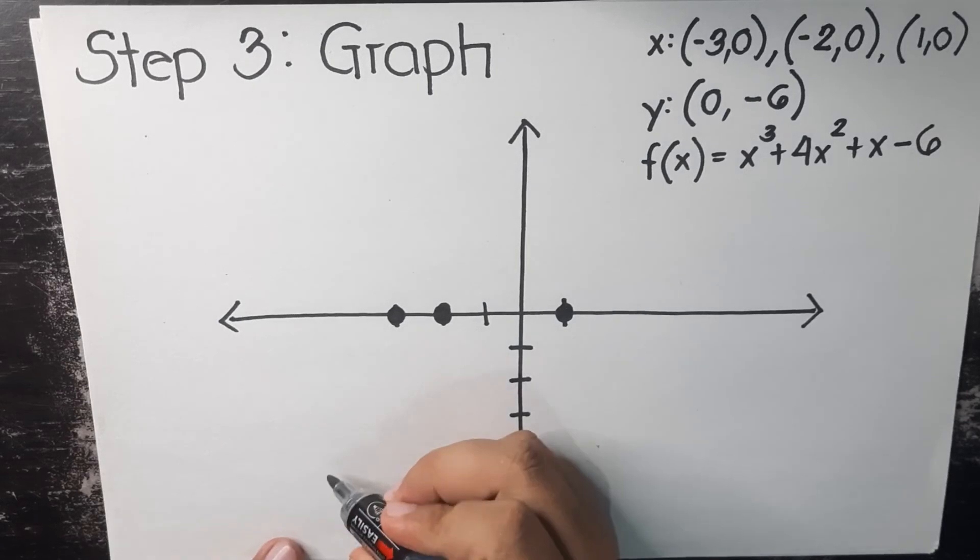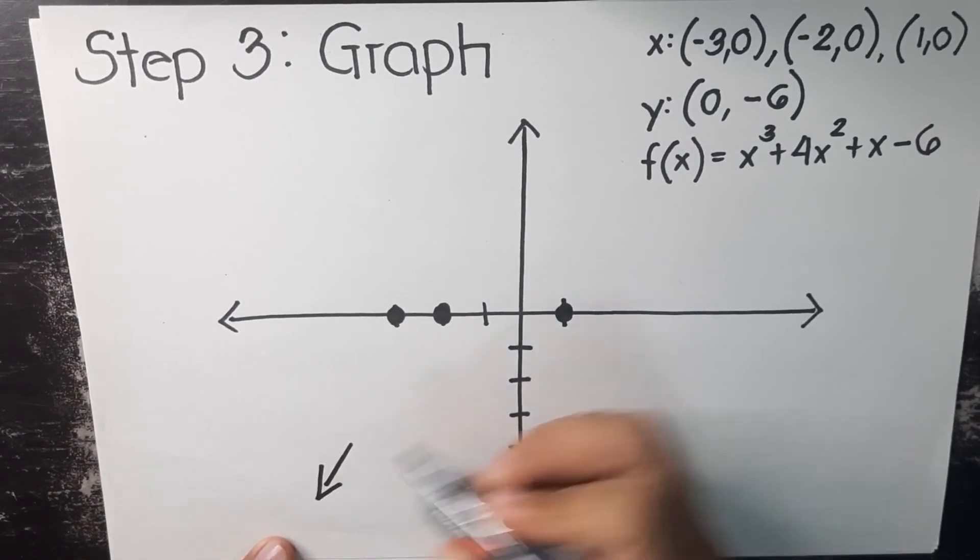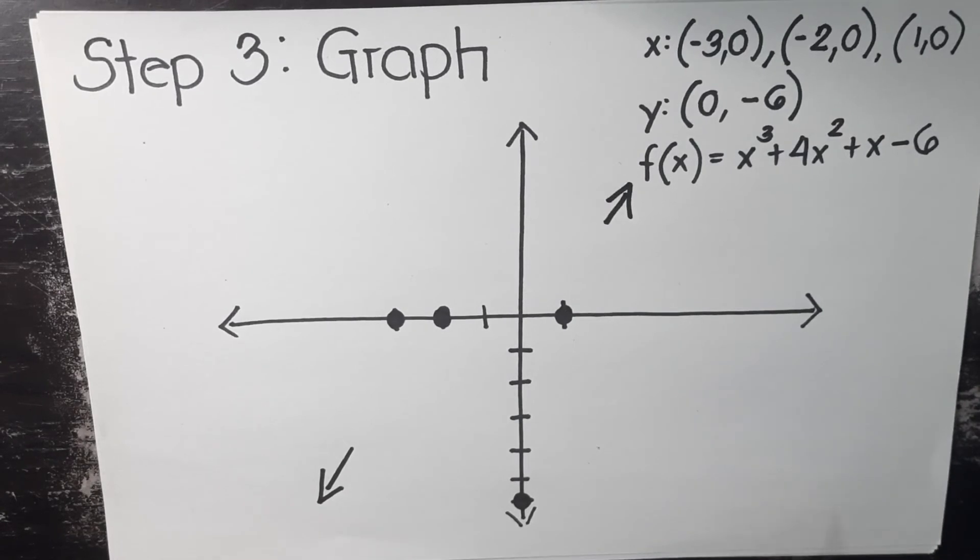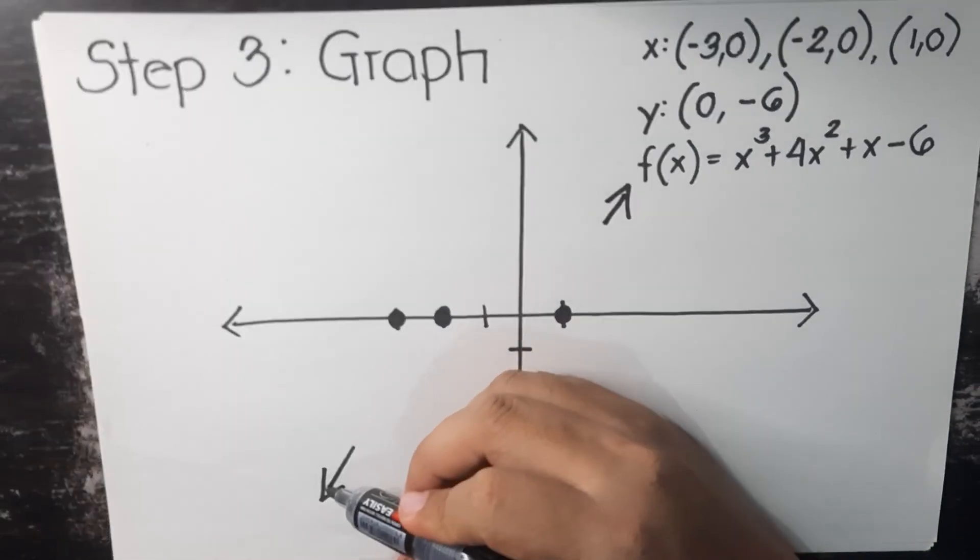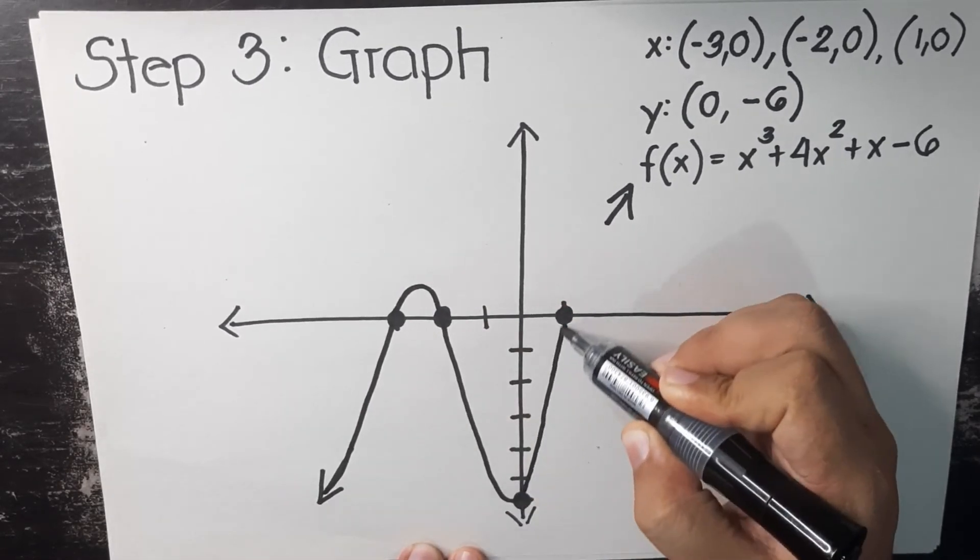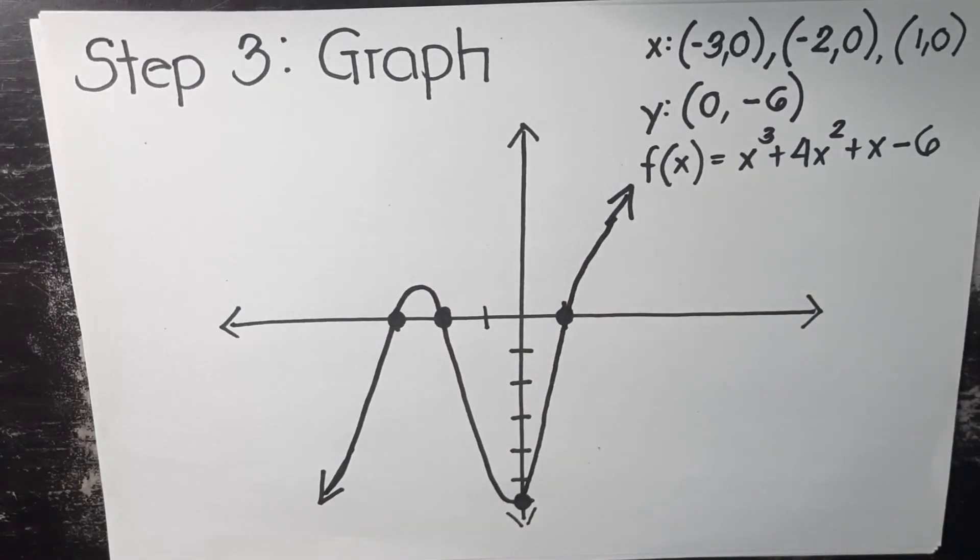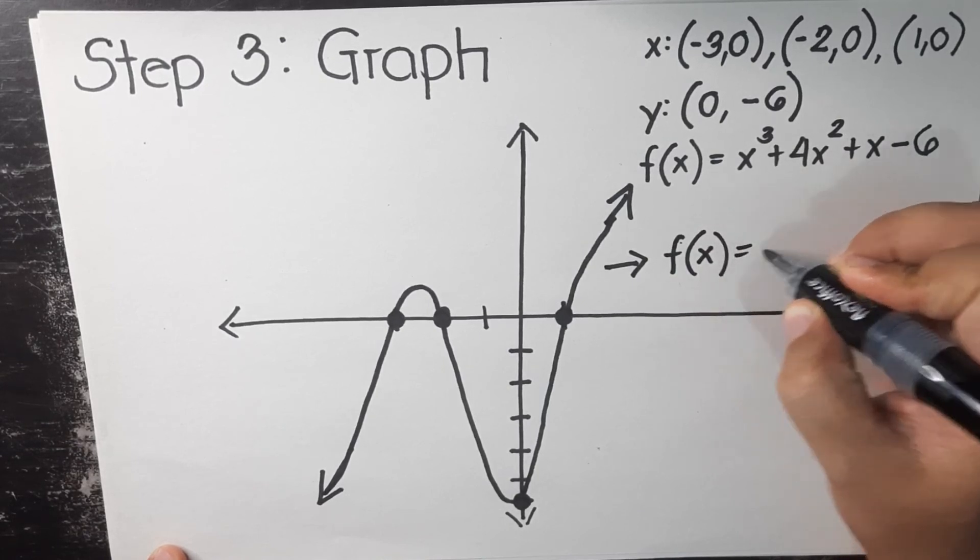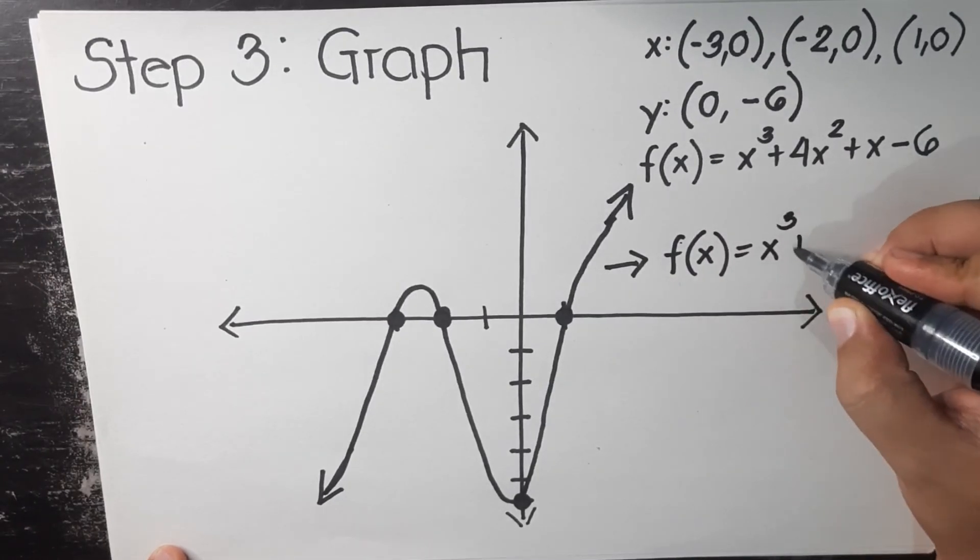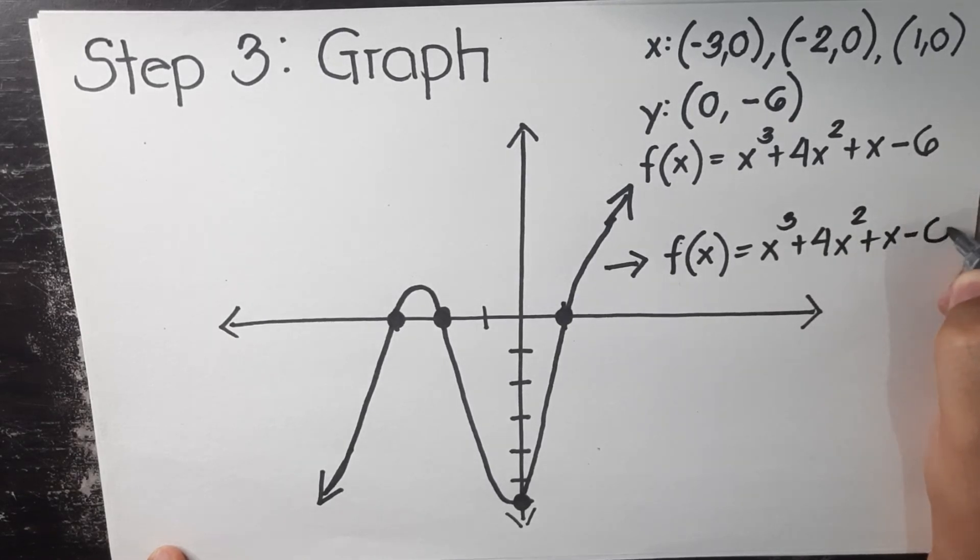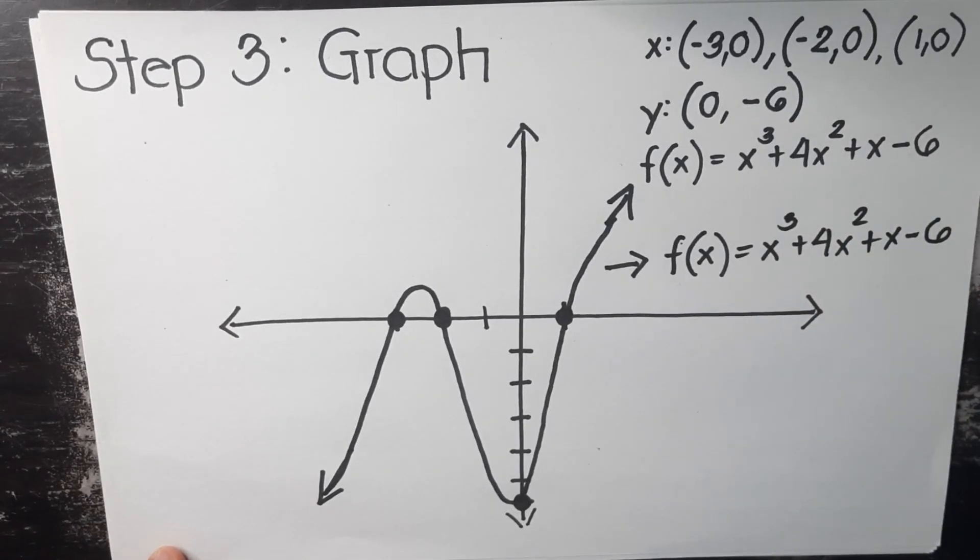Left hand is going down, right hand is going up. And based on that guide, we can now graph the image of this polynomial. This is our graph of the polynomial. And of course, we have to label that with f(x) = x³ + 4x² + x - 6. And that is the graph of the polynomial.